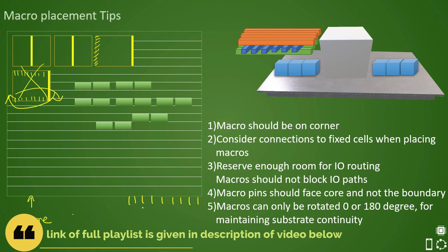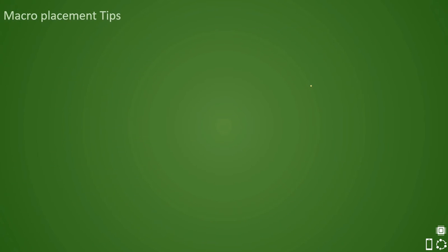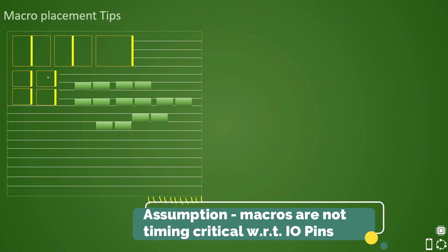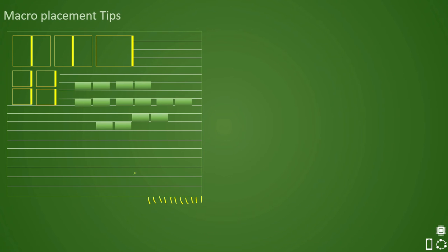If you want to revisit those explanations in depth, there is a link in the description for the full playlist. Now let us understand more tips on macro placement, carrying on from what we have already learned. For example, pins are on this edge of the core and you are placing macros away from the core allowing sufficient room for routing, based on the assumption that these macros are not timing critical. If they are timing critical, they will be placed very closely to the IO pins. These macros also have pins facing towards the core with sufficient spacing available between them.